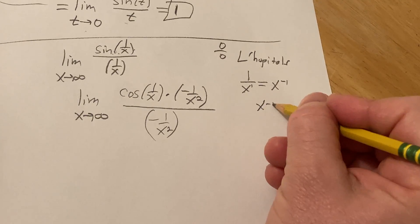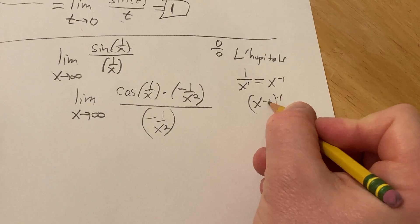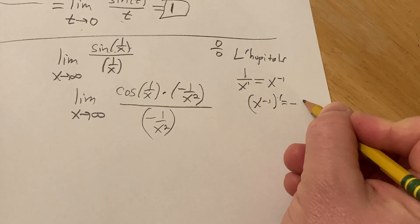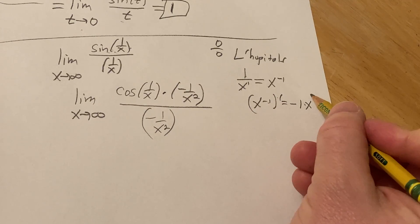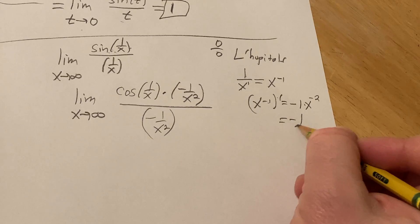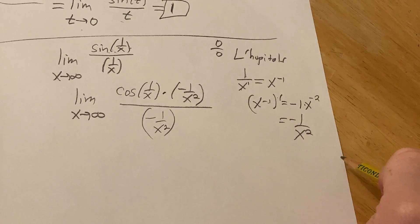And then when you take the derivative, you simply apply the power rule. So you bring down the negative 1 and you subtract 1 from the exponent, and so you get negative 1 over x squared like that.